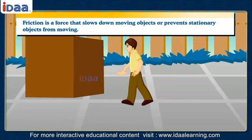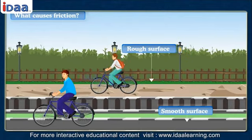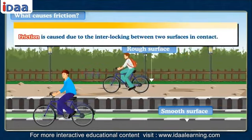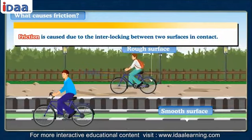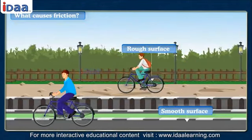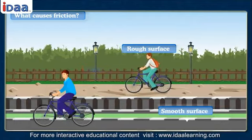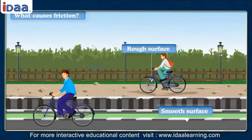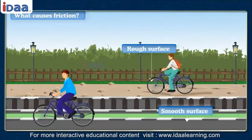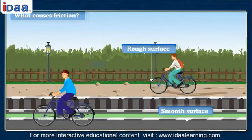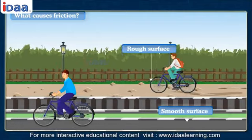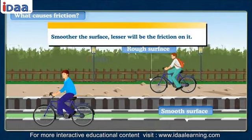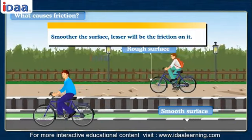What causes friction? Friction is basically a contact force. Friction is caused due to the interlocking between two surfaces in contact. Even those surfaces which appear very smooth have a large number of minute irregularities on them. Irregularities on the two surfaces lock into one another. This means that the smoother a surface is, the lesser will be the friction on it.